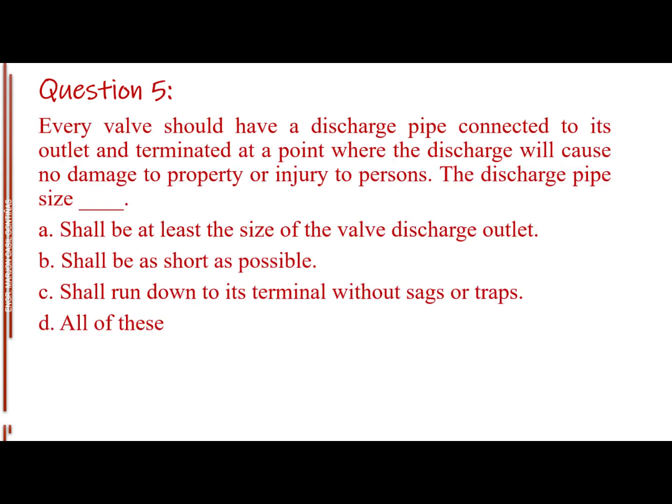Question number 5. Every valve should have a discharge pipe connected to its outlet and terminated at a point where the discharge will cause no damage to property or injury to persons. The discharge pipe size blank. Letter A, shall be at least the size of the valve discharge outlet. Letter B, shall be as short as possible. Letter C, shall run down to its terminal without sags or traps. Letter D, all of these. The answer is letter D, all of these.